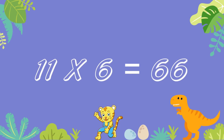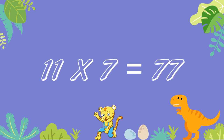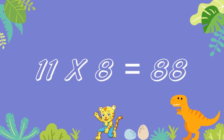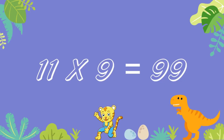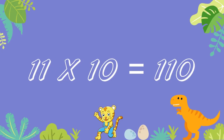11 sixes are 66. 11 sevens are 77. 11 eights are 88. 11 nines are 99. 11 tens are 110.